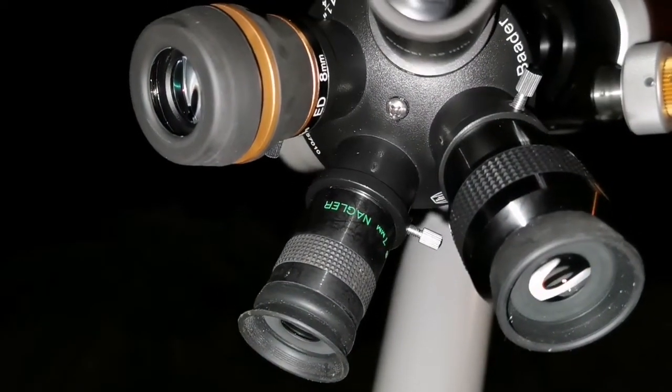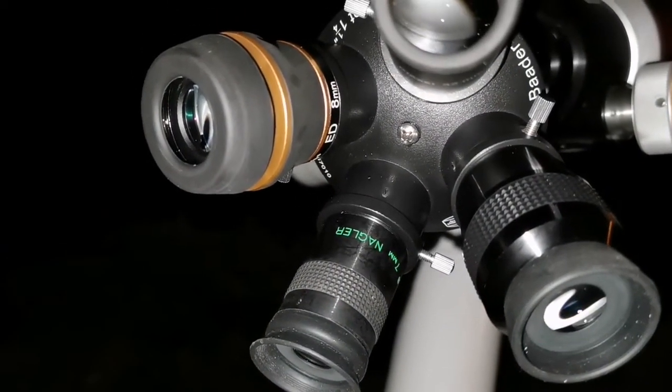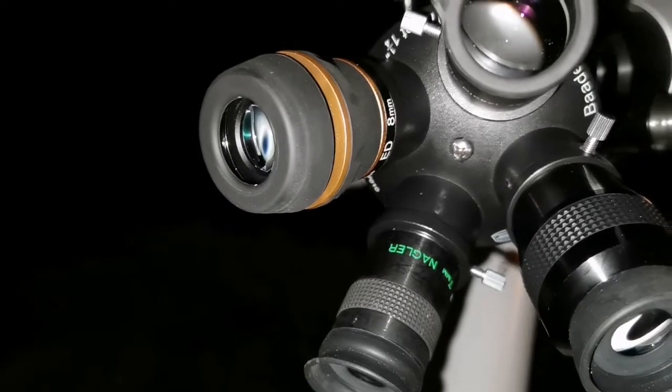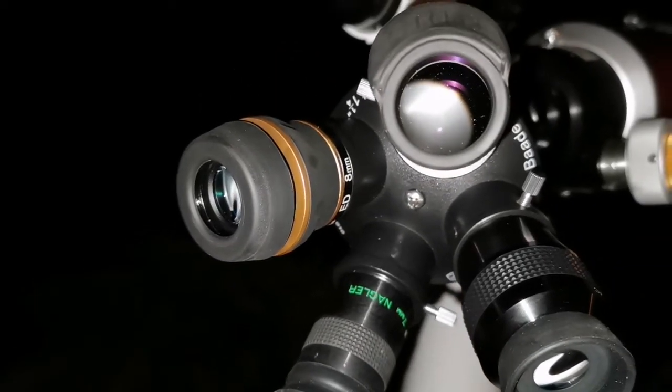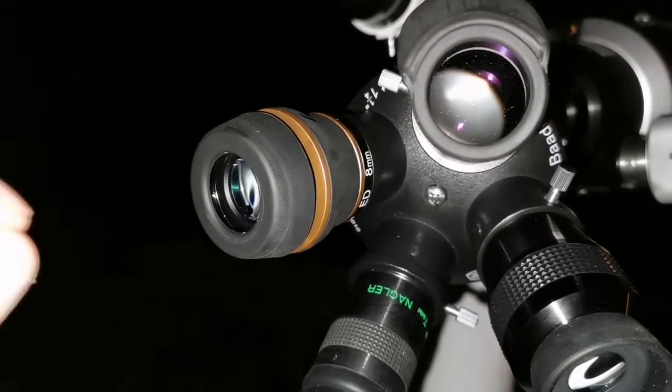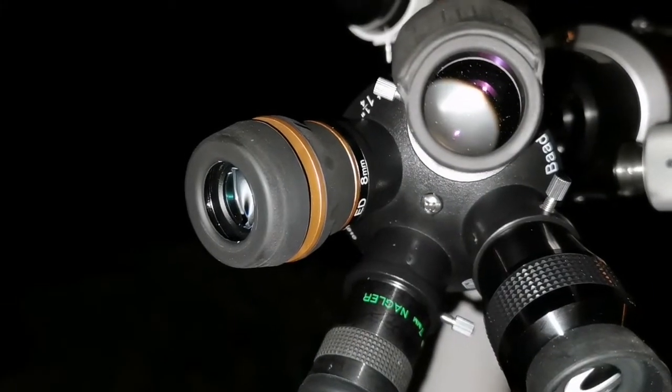It's very clear. I can see so many details: festoons, blue lines, blue patches on Jupiter, and yeah, Io is also passing in front of the satellite.